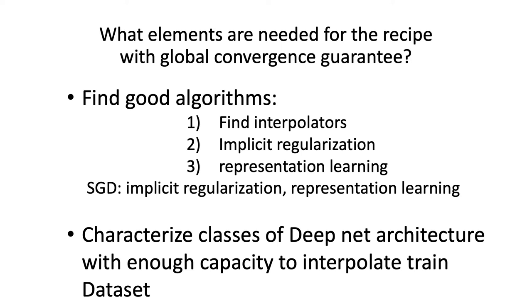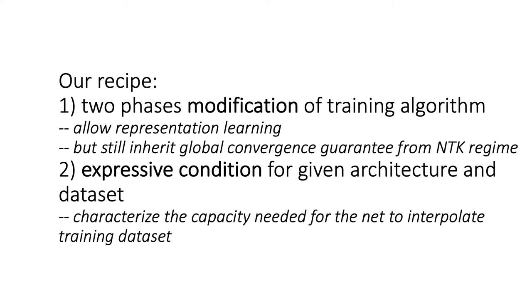First, we need to find a good algorithm that satisfies the following three criteria. First, the algorithm is able to find the interpolators that have zero training error. Second, it should provide implicit regularization. Third, it should do representation learning. SGD on normal practical deep net training does implicit regularization and it also does representation learning, but there is no guarantee of finding interpolators. To have such guarantee, we also need to characterize the classes of deep net architecture with enough capacity to interpolate the training data.